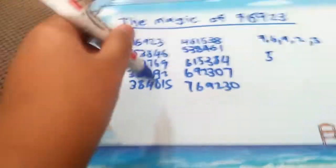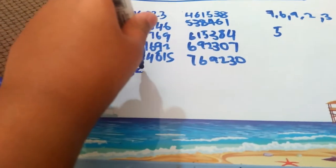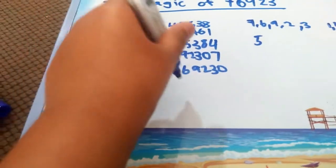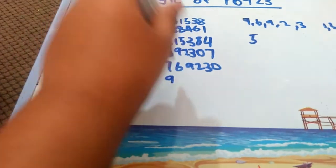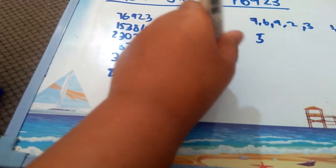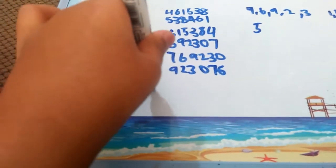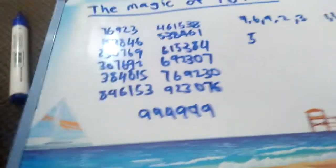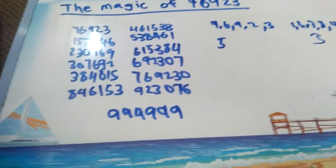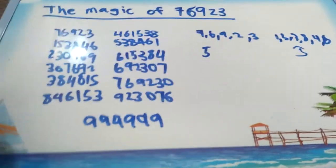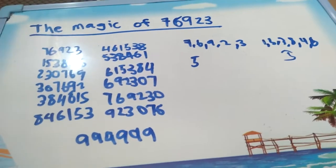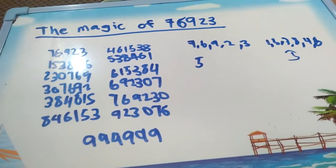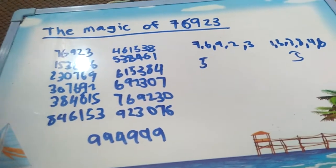Also, there are extra things: 846,153 and 923,076. Then 999,999. This is known as 76,923 times 13, and 7 times 142,857, because 999,999 is divisible by 7 and 13.